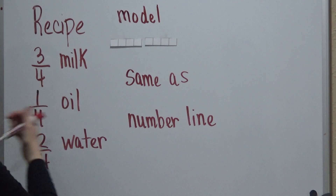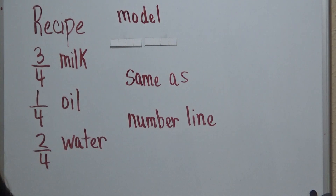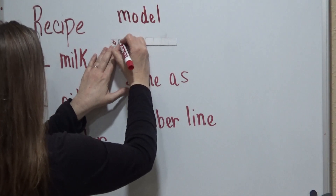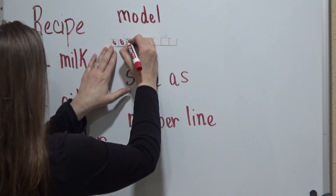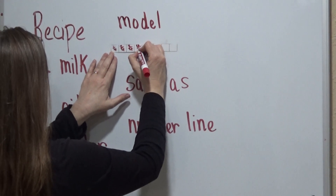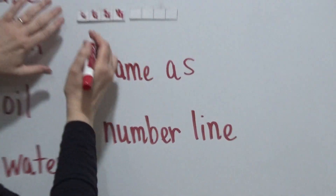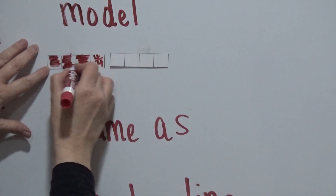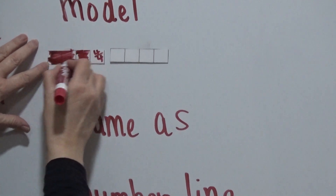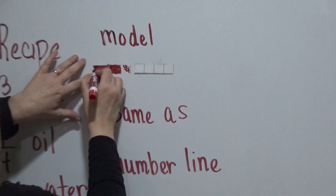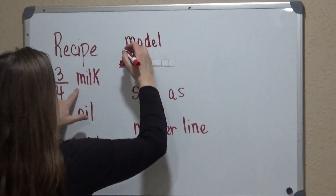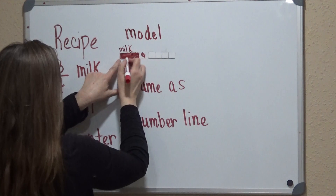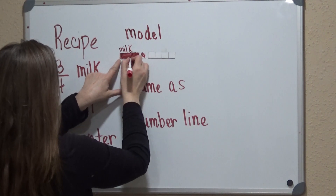So 3 fourths — we go ahead and we shade in 3 out of 4. So this would be 1 fourth, 2 fourths, 3 fourths, 4 out of 4. And we're shading in 3 out of 4: 1, 2, 3 — that's 3 out of 4. And that would be for milk. So if you want to write that down, you can draw these visual models to help you as well.